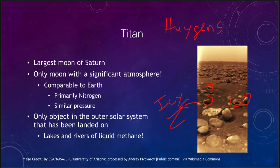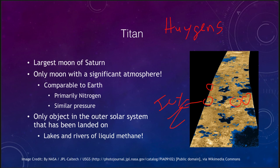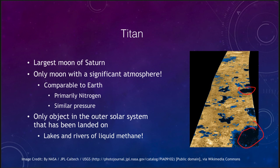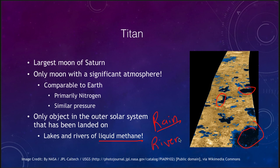From orbital radar imaging, we can see that Titan also has liquid on its surface — liquid methane. There are lakes of methane on the surface, making it the only object in the solar system other than Earth with a liquid cycle: lakes, rivers, and methane rain can all occur. Titan may have a methane cycle much like the Earth's water cycle, where methane evaporates and then rains back out in a complete cycle.